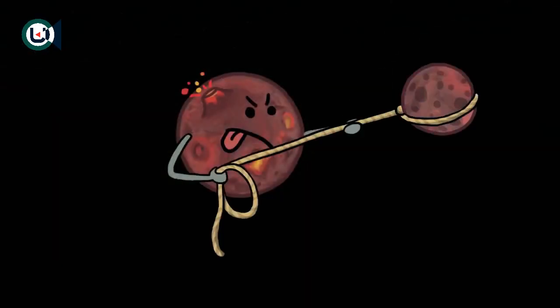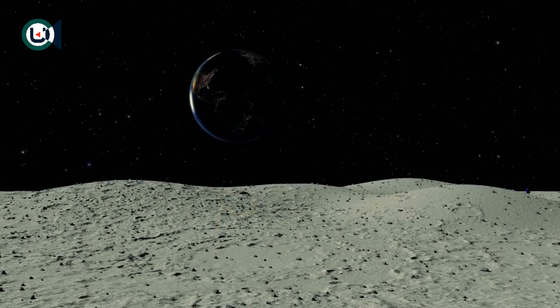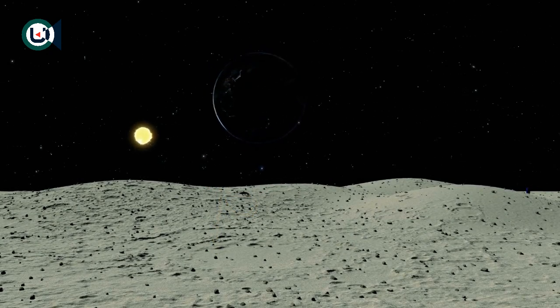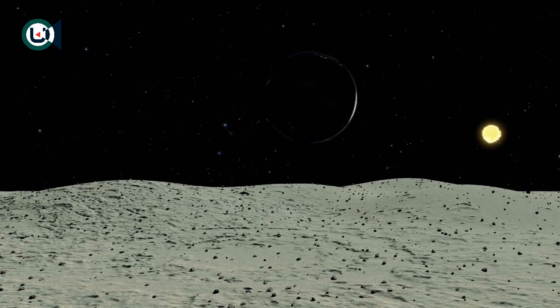Tidal locking is the name given to the situation when a Moon or planetary object's orbital period matches its rotational period. Coincidentally, it is the same fate that affects every single large Moon orbiting a planet. A great example of this is our own Moon.